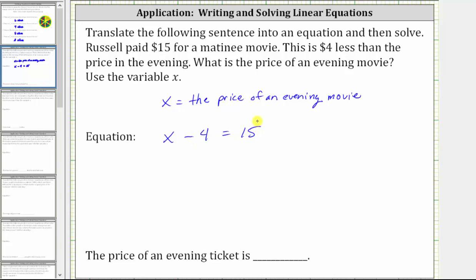Again, if we begin with the price of an evening movie, we would have to subtract $4 so that it is equal to the price of the matinee movie, which we know is $15. So this is the equation that models the situation.